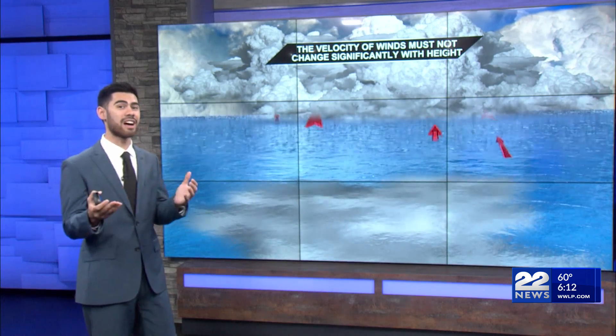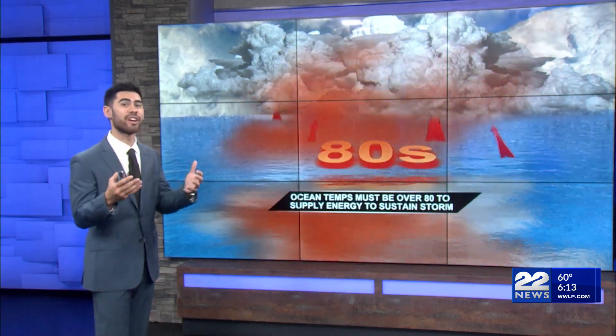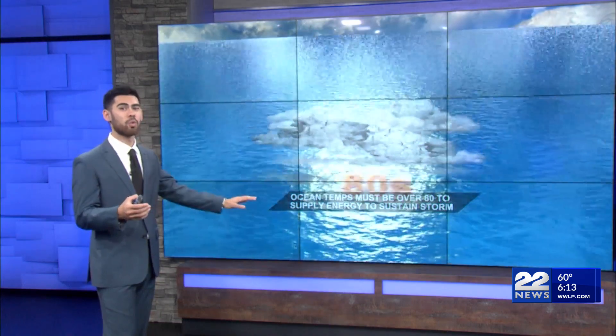Then, we need wind speeds to not change too rapidly. They can't decelerate or accelerate in wind velocity too much, otherwise it won't create stable conditions for a storm. As it turns into more of a tropical system, we need warm water temperatures of 80 degrees or higher.